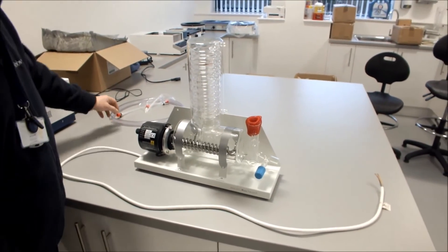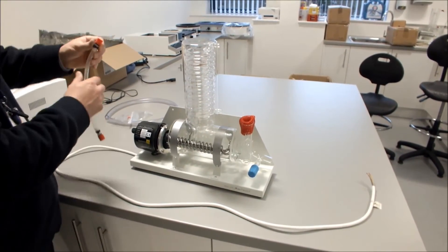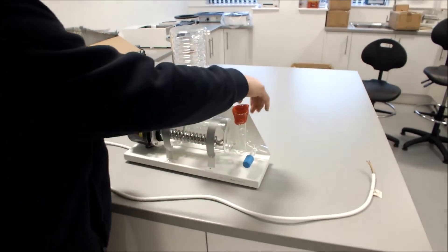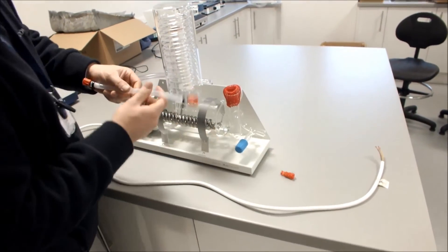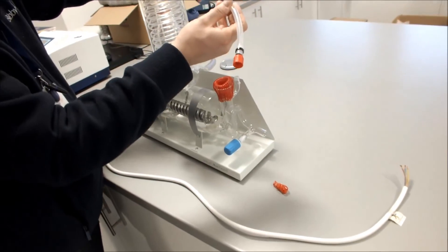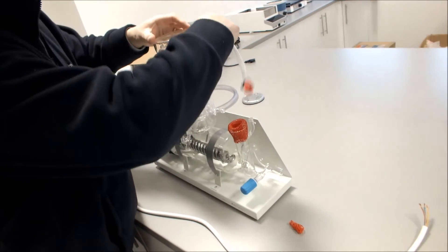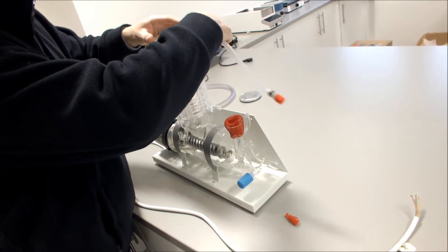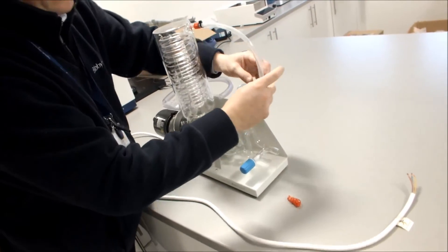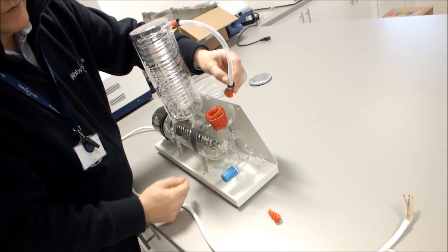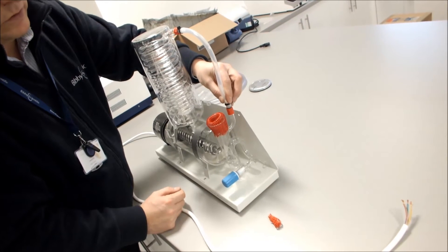When we've done that, we then take our 8mm tubing with the two connectors. We then connect this to the outlet, which is the top of the condenser. We then connect it to the connector sidearm of the water constant level control.